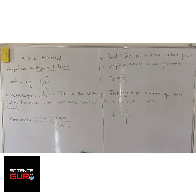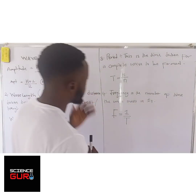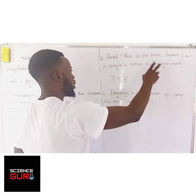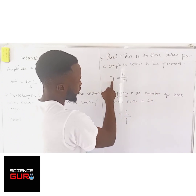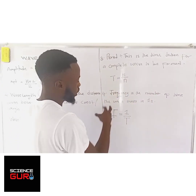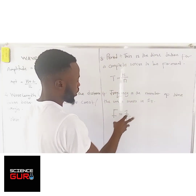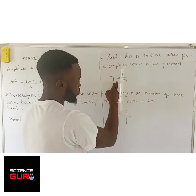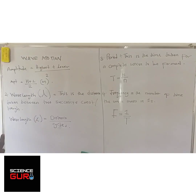We also have wavelength, which is distance over cycle. Then period — the time taken for a complete wave to be formed — so period equals time divided by the number of oscillations. Then frequency is the number of times the wave oscillates per second, and frequency is the inverse of period.